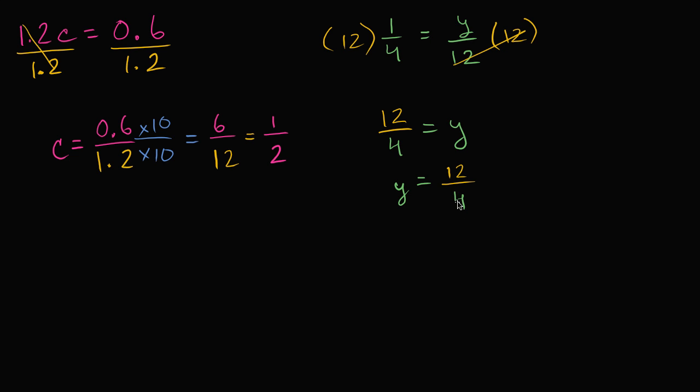Now what is 12 fourths? Well you could view this as 12 divided by 4, which is 3. Or you could view this as 12 fourths, which would be literally 3 wholes. So you could say this would be equal to 3. Y is equal to 3, and you could check that. 1 fourth is equal to 3 over 12. So it all works out. That's the neat thing about equations. You can always check to see if you got the right answer. Let's do another one. Can't stop.